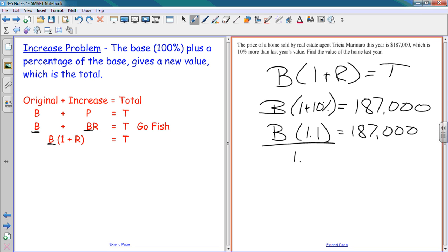Divide by 1.1. $187,000 divided by 1.1 equals $170,000. So B equals $170,000. Does that make sense? Last year was $170,000. The price increased 10% and this year she sold it for $187,000.